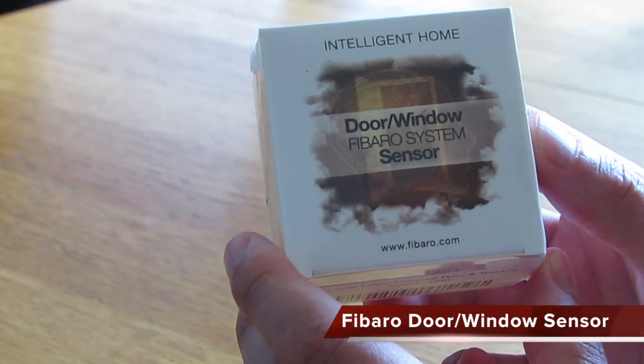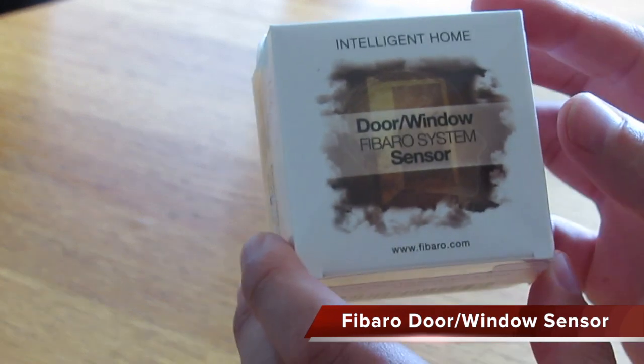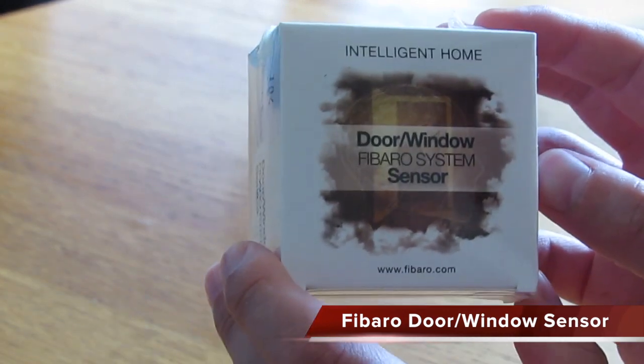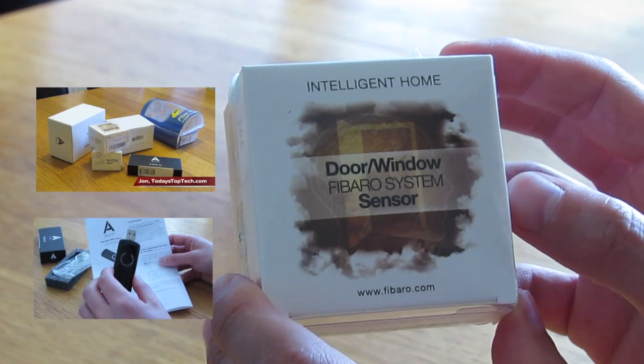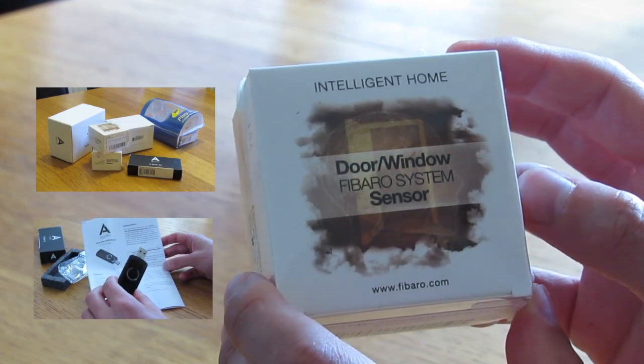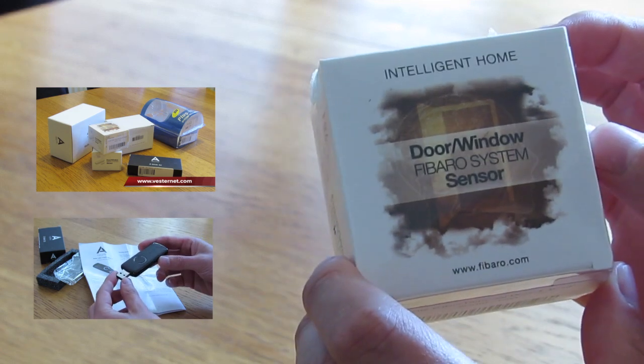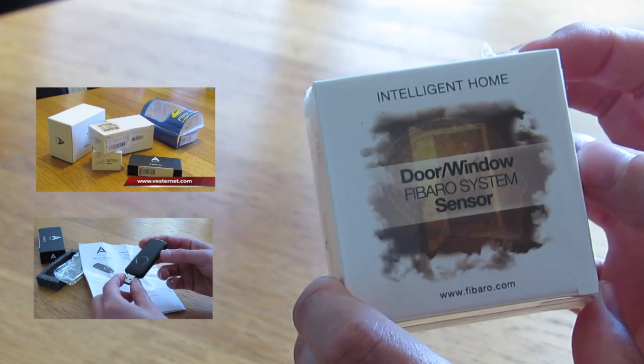Okay, this is a quick unboxing video. We're going to look at this Fibaro door and window sensor, a z-wave sensor as part of our home automation series. If you haven't already looked at the previous two videos, I suggest you check those out. Links are on the screen.